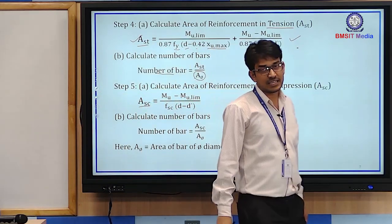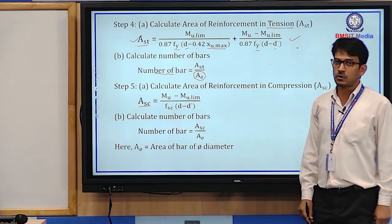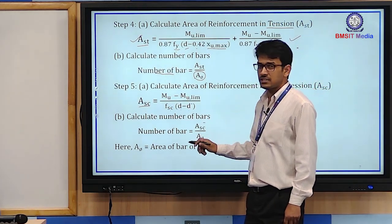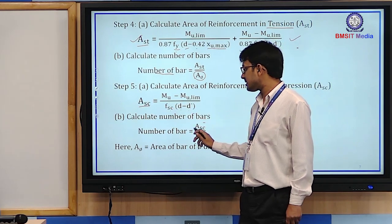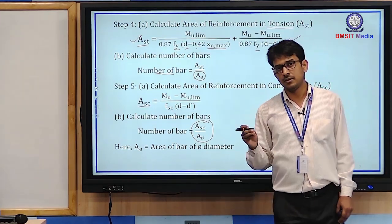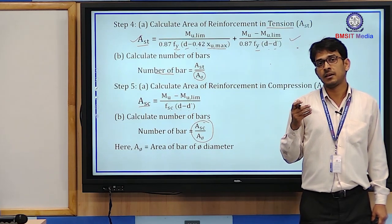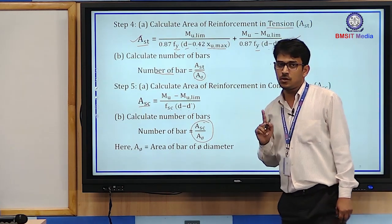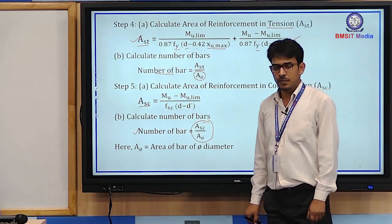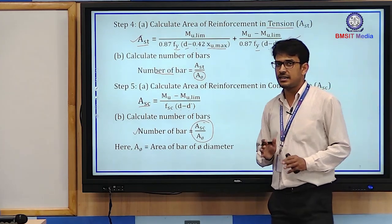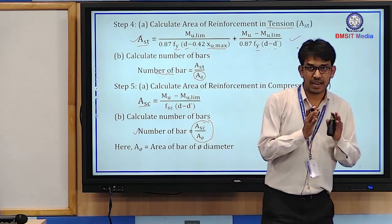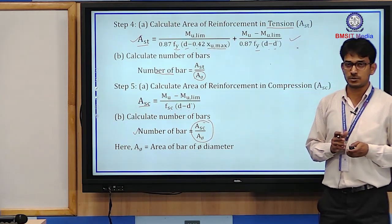For compression reinforcement (Step 5), the formula is: Asc = (Mu − Mu,lim) / [fsc × (d − d')]. Using this, we calculate Asc, choose a bar diameter, calculate the cross-sectional area of one bar, divide Asc by that area, and get the number of bars in the compression zone. At the end, we draw a detailed cross-sectional diagram of the doubly reinforced beam.